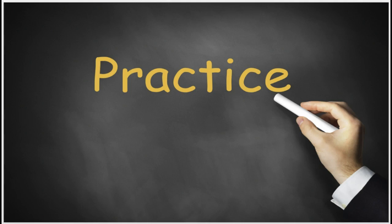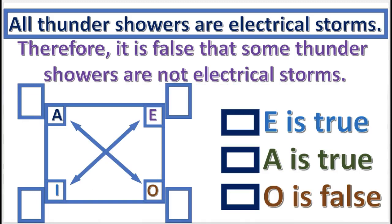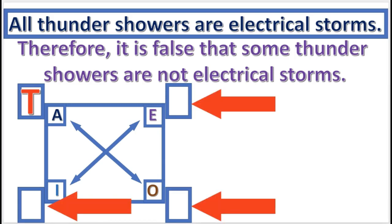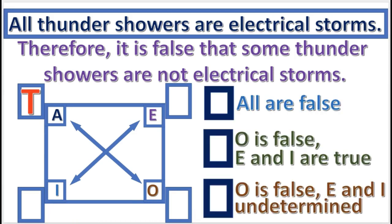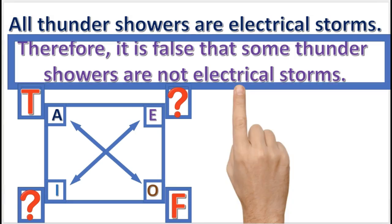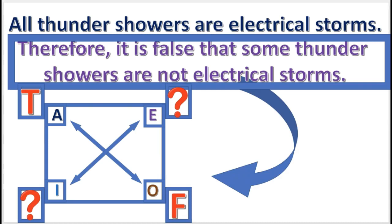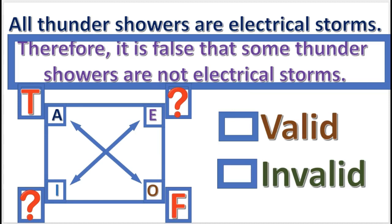Let's work a few practice problems. Practice problem number one: for the premise, what truth value do you enter into the square of opposition? A is true — the premise is an A proposition, and we assume that it's true. Next, what is the truth value for the other propositions? O is false, because it is the contradictory of A, and E and I are undetermined. The conclusion claims that O is false. Since the conclusion matches the square, the inference is valid.